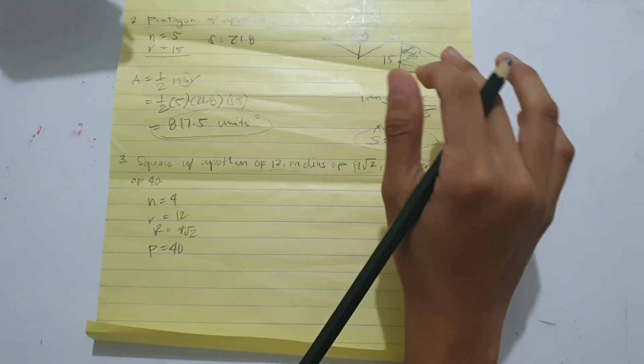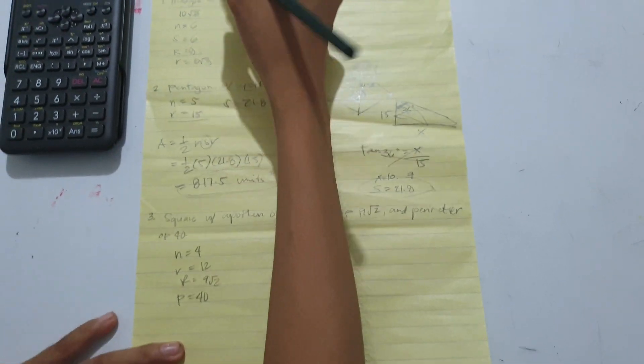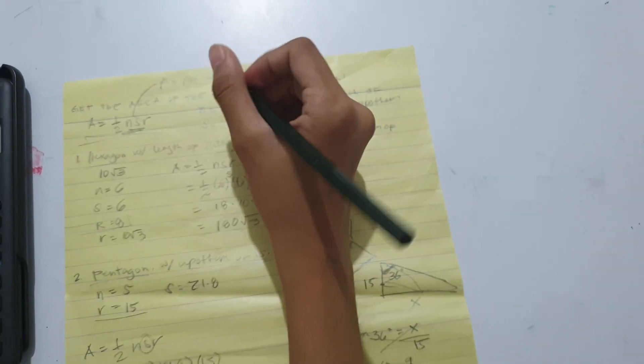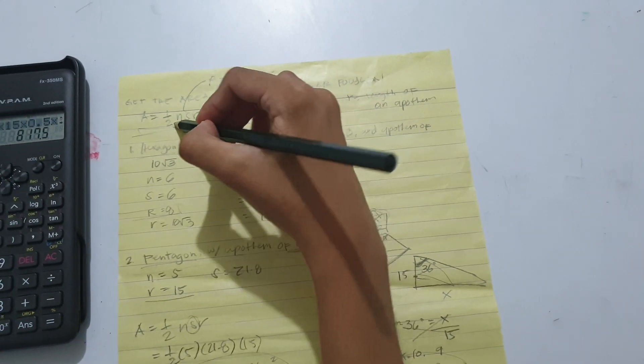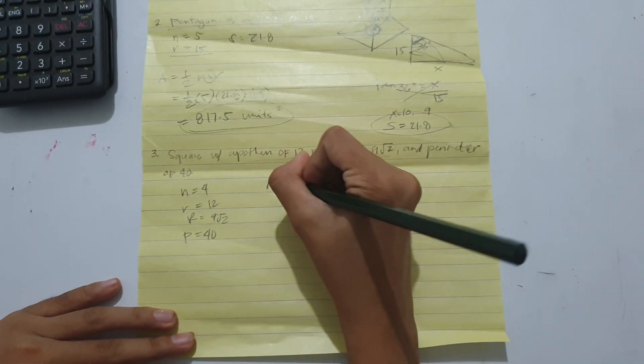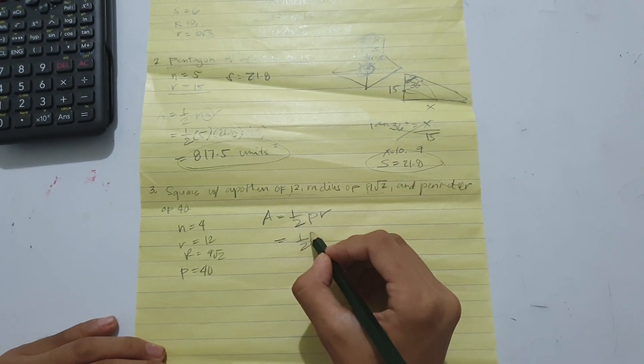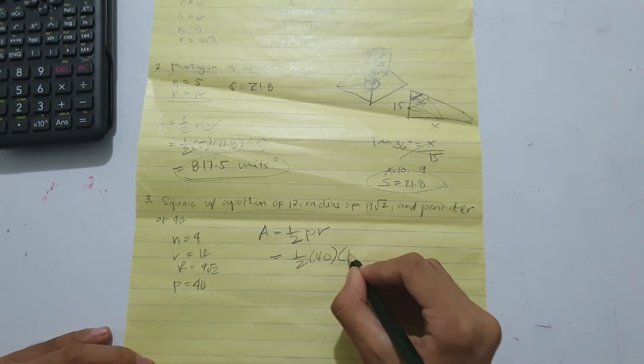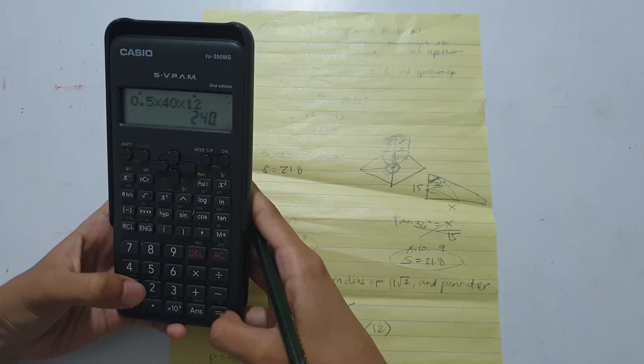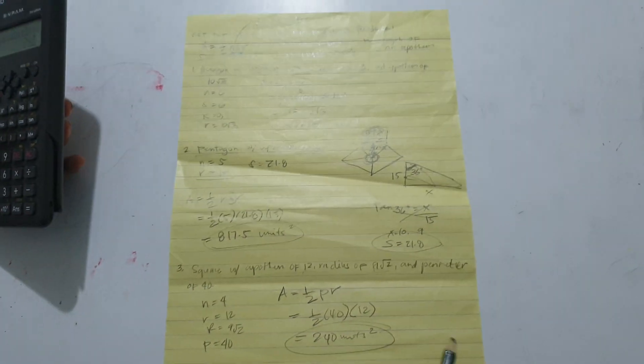Now, instead of making things difficult, we can easily derive N S as P, since P is perimeter and can be calculated by multiplying the number of sides and the length of a side of a polygon. So the formula would be one-half P R. Substitute: one-half times 40 times the apothem of 12. And that would be 240 units squared as its area.